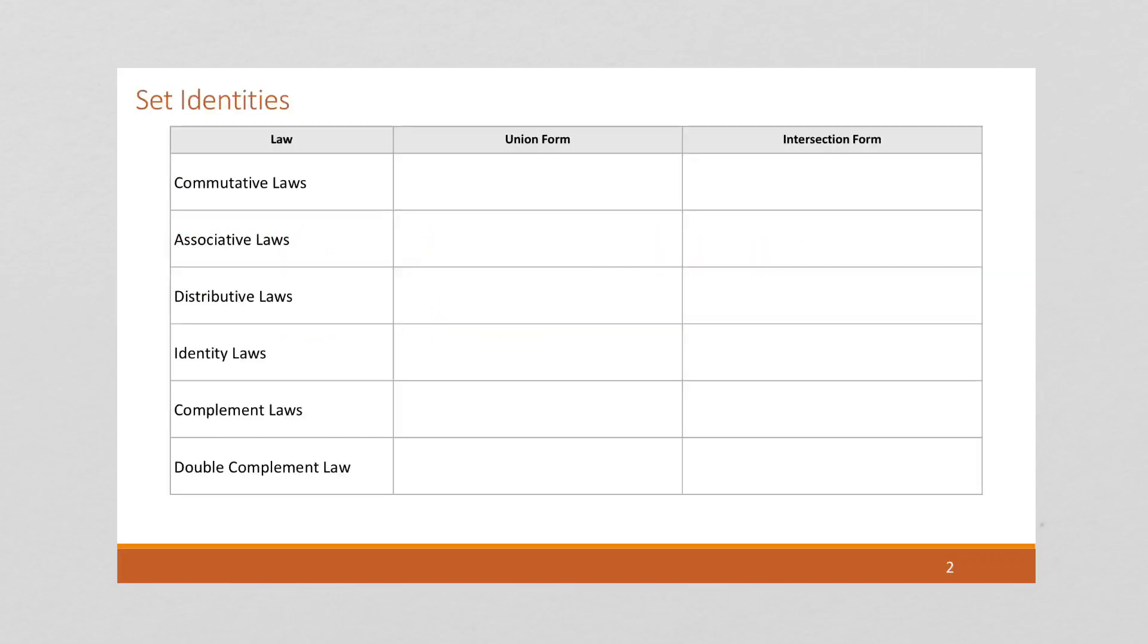These are the laws that we can use with sets. For example, if we have a set A and we union it with B, this is the same as if we reverse the order. That is the commutative laws. So we can do this with union, or we can do this with intersection.